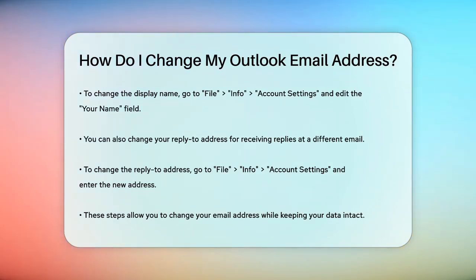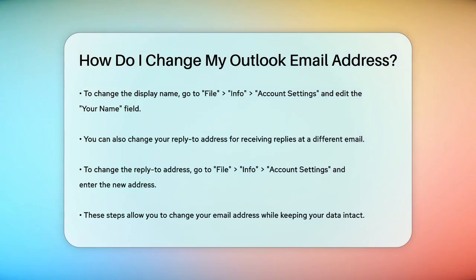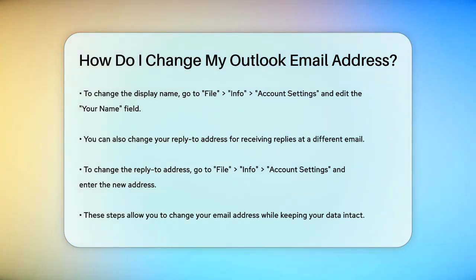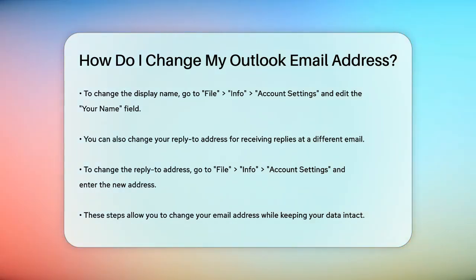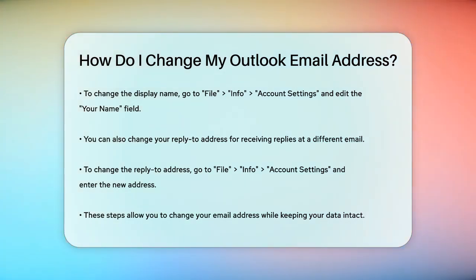You can also change your reply-to address in Outlook, which allows you to send emails from your current address but receive replies at a different email address. Go to File, Info, then Account Settings, select the email account, and enter the new reply-to email address. By following these steps, you can change your Outlook email address without the hassle of setting up a new account or losing your important data.